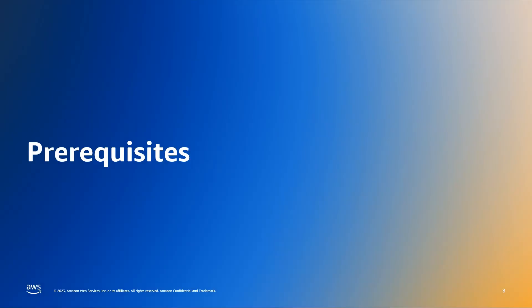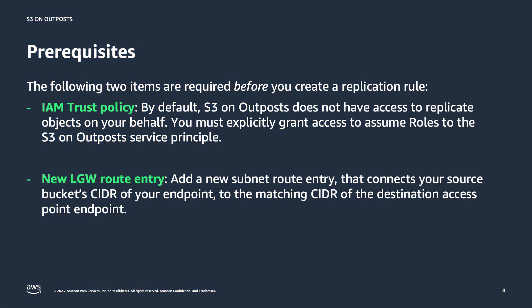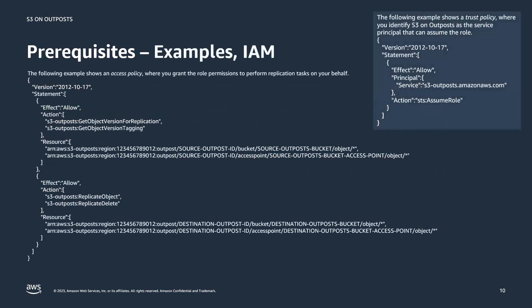Now we'll cover the two prerequisite steps that customers take before creating a replication rule. The first is enabling S3 on Outposts with an IAM trust policy to be able to replicate the objects on your behalf. Second, from a networking perspective, you'll create a new local gateway route entry table to connect your source and destination endpoints so that your traffic egresses from one Outpost over the other across your local gateway. We'll see how we create an IAM policy with the STS Assume Role for the service principal Outposts, and we can limit the access policy to only include the source bucket and access point as well as the destination bucket and destination access point.